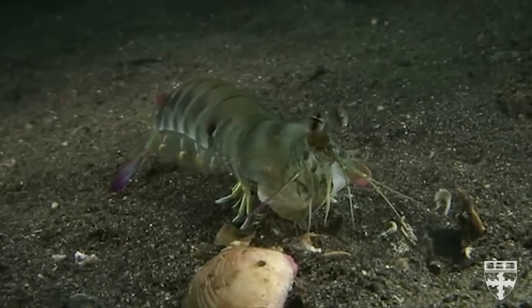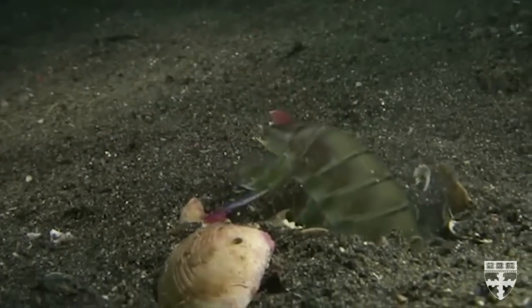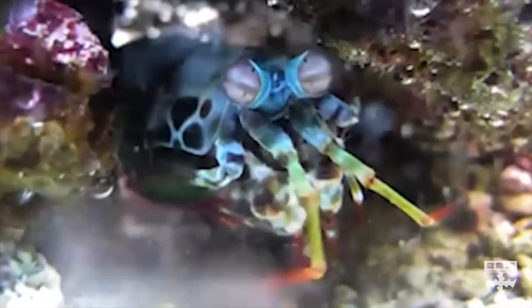Certain creatures, like many insects, bees, shrimps, have built into their eyes this polarization imaging capability. And it's very powerful. Why?